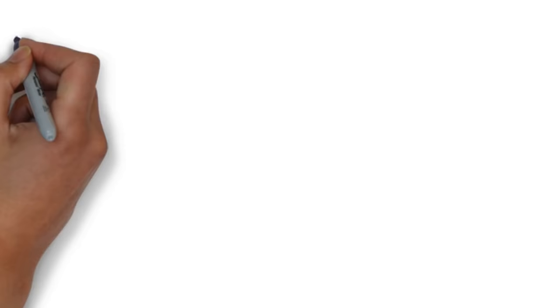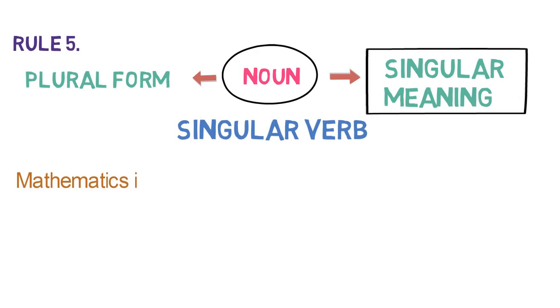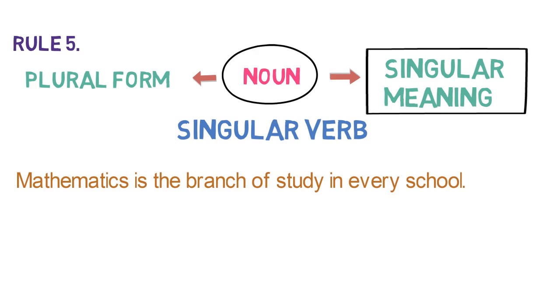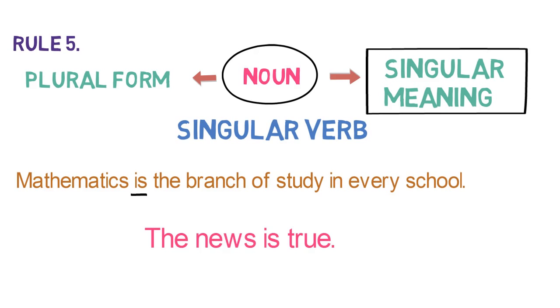Rule number 5 says: some nouns which are plural in form but singular in meaning take a singular verb. For example, 'Mathematics is the branch of study in every school.' The noun mathematics is in plural form but singular in meaning, so we have used IS. Another example: 'The news is true.' The noun NEWS is in plural form but singular in meaning, so we have used IS. So this is Rule 5.